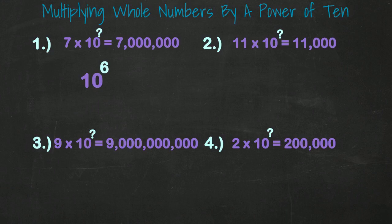Next example, 11 times 10 to what power is 11,000? Three zeros means 10 to the 3rd power or 10 cubed.